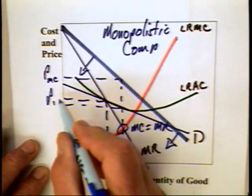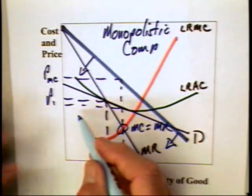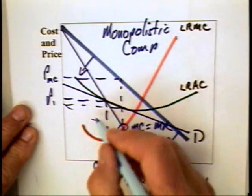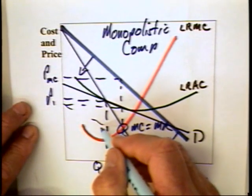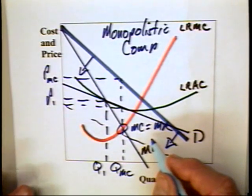Now, in a monopolistic competitive market, it's possible that the demand curve could come all the way down to here. If so, if it did come down to, say, that position, the price that could be charged would definitely be below the average cost and losses would be made.